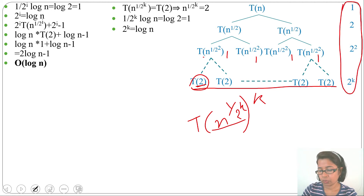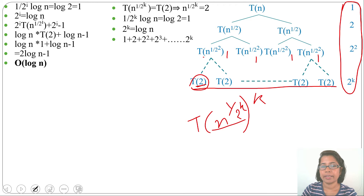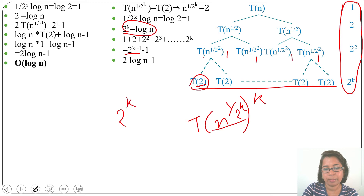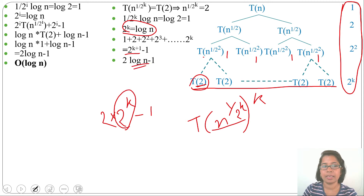The sum 1 + 2 + 2² + … + 2^k = 2^(k+1) − 1 = 2·2^k − 1. Substituting 2^k = log n gives 2 log n − 1. So the running time is O(log n). Both backward substitution and recursion tree methods give the same answer: O(log n).